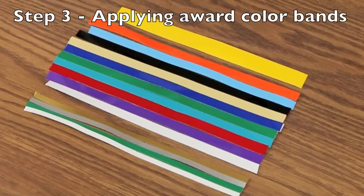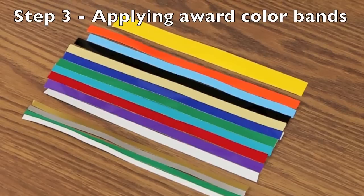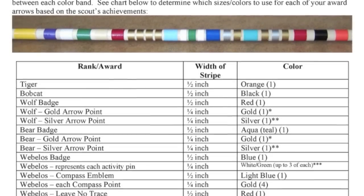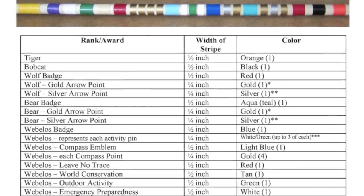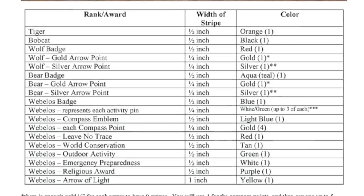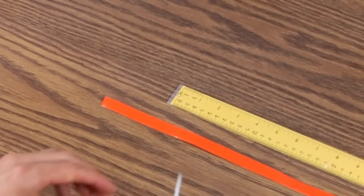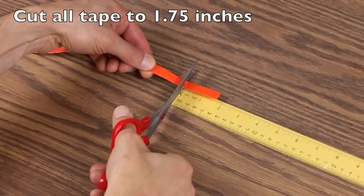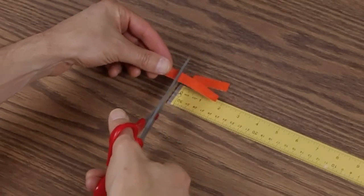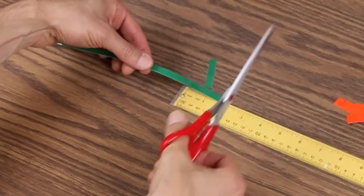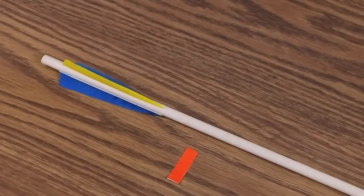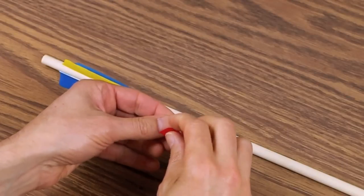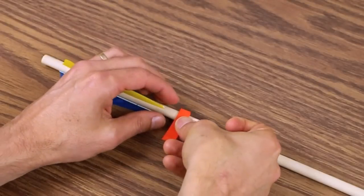The third and final step in assembling the arrow is applying the award color bands. There are three different widths of the award color band tape, so you'll want to read the instructions very carefully. The included chart shows you which award corresponds to which piece of tape. The process of applying the tape is quite simple. Take each of the long pieces and cut them to exactly one and three-quarters inches. You'll do this for all of the tape. Once you have all of your pieces cut, group them by arrow so that you have a pile of tape for each of your scouts. Lay the piles out in the order in which you would like to apply the tape.